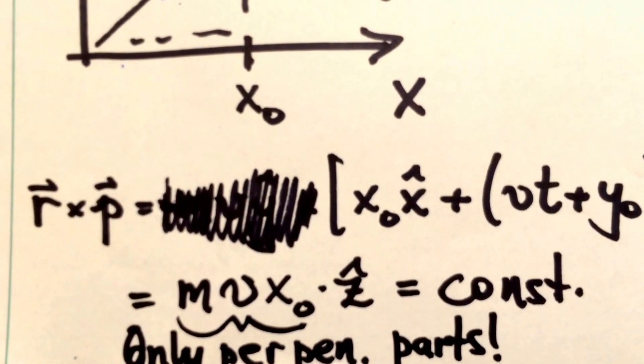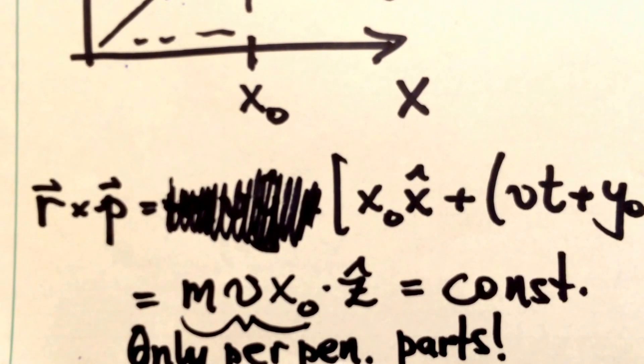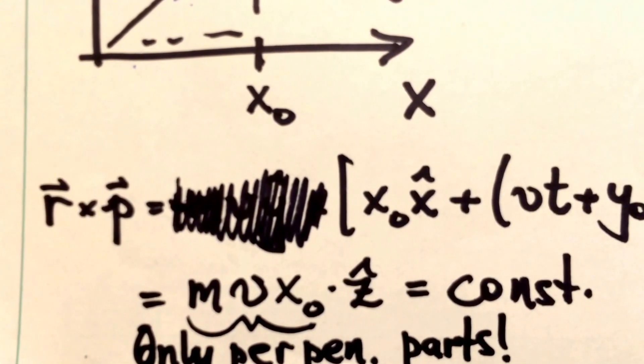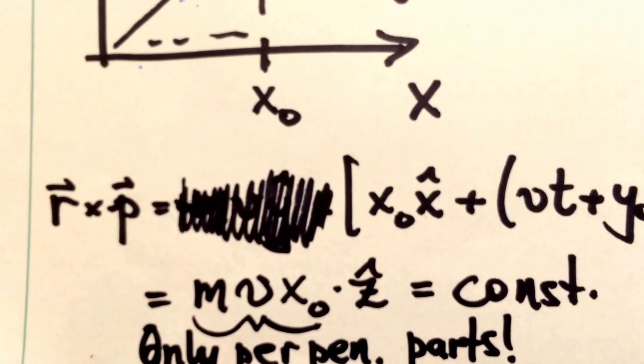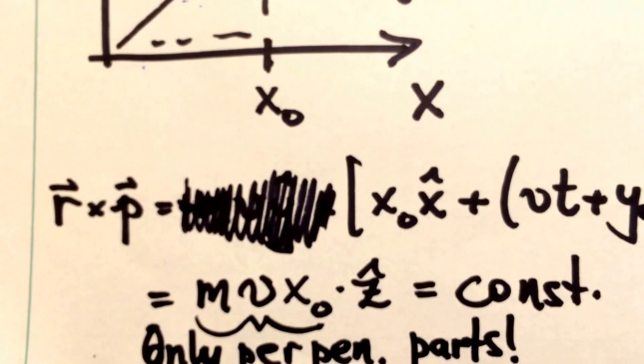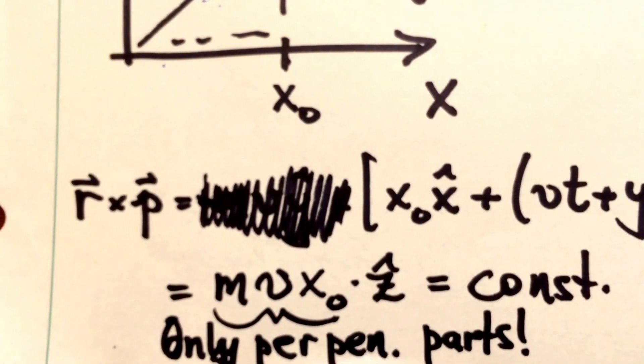which is a constant. This is a very important fact. The cross product between two vectors selects out only the portions of those two vectors that are perpendicular to one another. Everything else turns out to be zero.